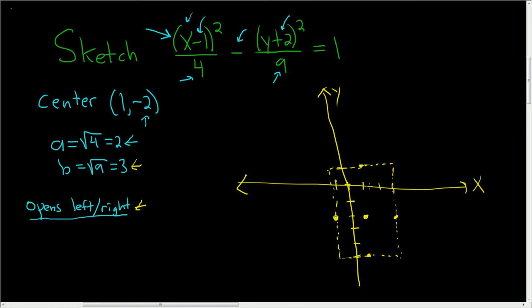And it opens left and right, so now we can draw the asymptotes. The asymptotes look like this. They cut across the rectangle. They cut through the diagonals like a knife. Looks really pretty.